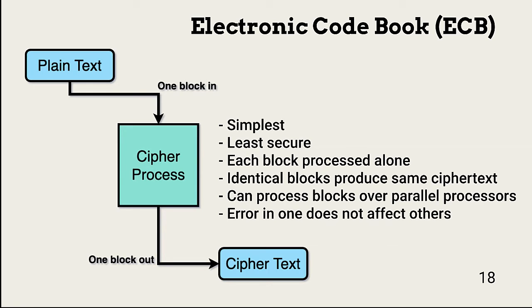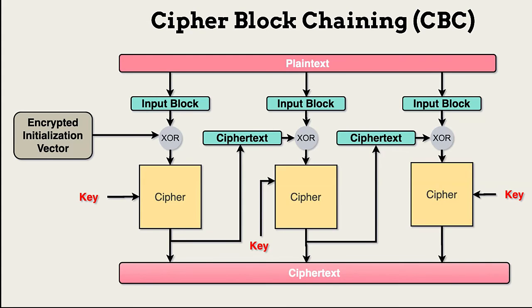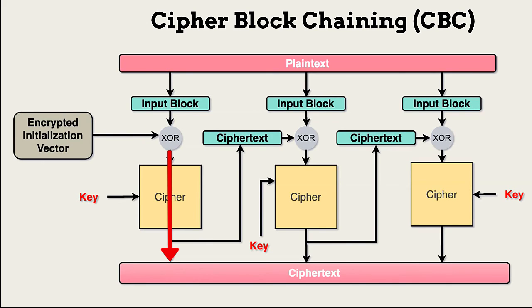Cipher block chaining, CBC, removes the possibility of repeated cipher blocks by introducing an initialization vector, or IV, together with XORing of cipher text. When encryption begins, a random IV is created and XORed with the first block of plain text. The resulting block is processed through the cipher steps, and the resulting cipher text replaces the IV as the input for XOR with the next block of plain text. This continues until all blocks are processed.